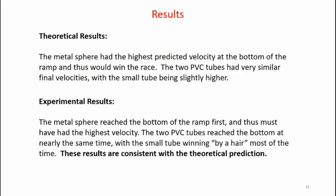To recap, the theoretical results had the metal sphere having the highest velocity, and thus should get to the bottom of the ramp first. The two PVC tubes had very similar final velocities, the small tube being slightly higher. The experimental results had the metal sphere winning obviously every time, and by quite a bit of distance. The two PVC tubes reached the bottom at nearly the same time, the small tube winning by a hair most of the time. These results are obviously consistent with the theoretical prediction.